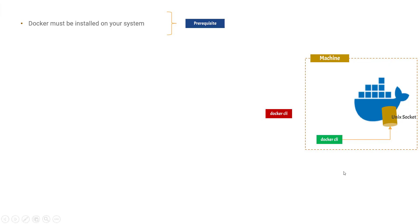Now let's say there is a different scenario where a Docker CLI is present outside the machine and you want to talk to this particular Docker server. For that, you need to expose a port running on TCP which supports REST API — basically HTTP protocol. Using that protocol, the Docker CLI can connect to the Docker server using port 2375. This is by default available in any Docker system when you install Docker, but this setup is quite tricky to start and run.